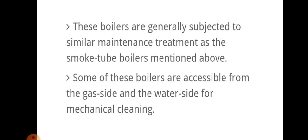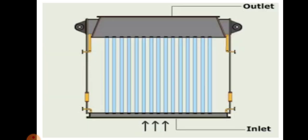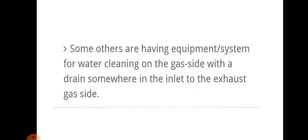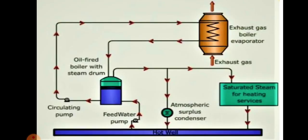Some of these exhaust gas boilers are accessible from the gas side and water side for mechanical cleaning. There will be outlet and inlet as shown. Some others have equipment or a system for water cleaning on the gas side, with a drain somewhere in the inlet to the exhaust gas side.